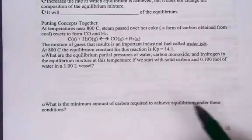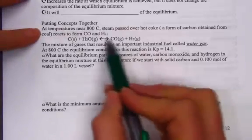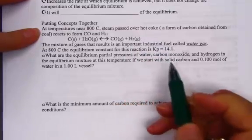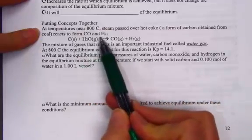Putting concepts together, our last problem in the notepack. At temperatures near 800 Celsius, steam passes over hot coke, that's a form of carbon obtained from coal, reacts to form CO and H2.